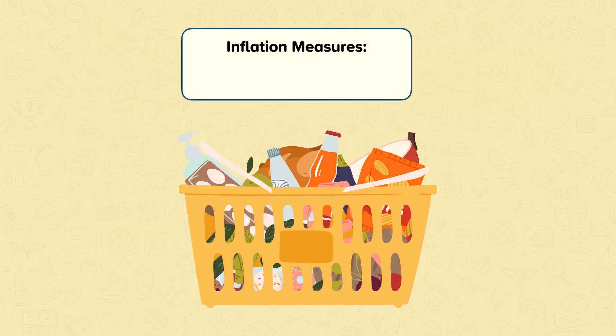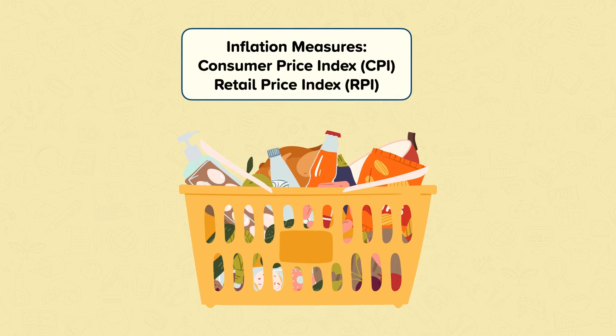There are two main measures of inflation in the UK: the Consumer Price Index and the Retail Price Index. The figures are compiled by the Office for National Statistics. The inflation rate is calculated every month by looking at the changes in prices of goods and services. The prices are looked at in over a hundred different areas across the UK so that regional differences can be taken into account.